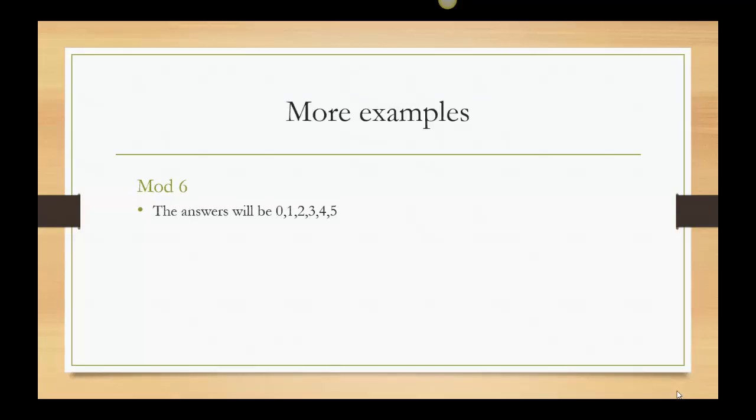In mod 6, we know our answers will be 0, 1, 2, 3, 4, and 5. So, take an easy one, 8 mod 6. It's just 2. 8 minus 6 is 2. When they're small, we can just subtract.